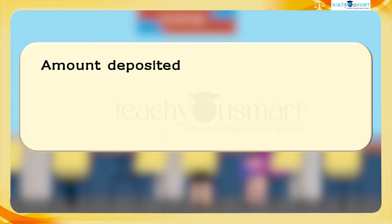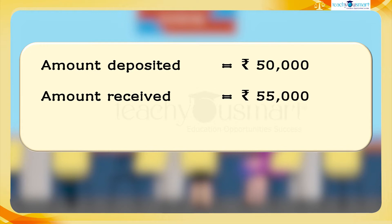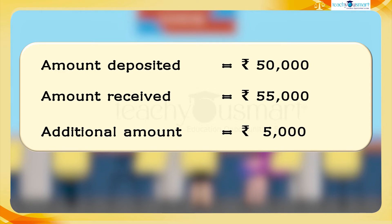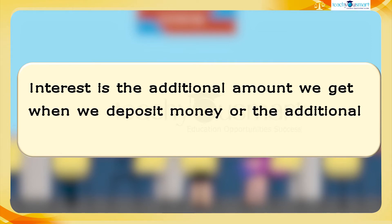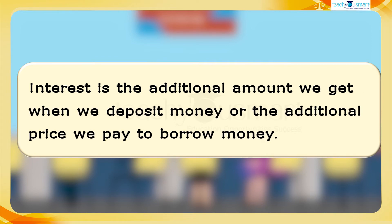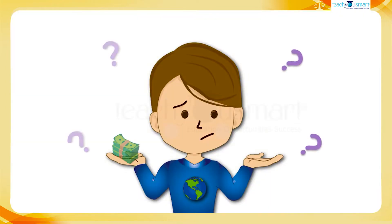They deposited only 50,000 rupees but received 55,000 — that is, they got an additional amount of 5,000 rupees. The additional amount we get or pay is called interest. Interest is the additional amount we get when we deposit money, or the additional price we pay to borrow money. But how can we calculate the interest?